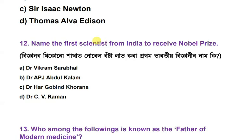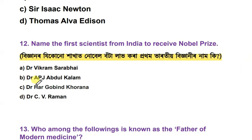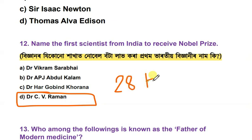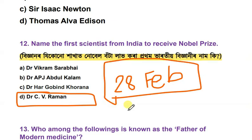Name the first scientist from India to receive the Nobel Prize. The options are Vikram Sarabhai, Dr. A.P.J. Abdul Kalam, Dr. Hargobind Khorana, and Dr. C.V. Raman. The answer is Dr. C.V. Raman — this is the Raman Effect. National Science Day is celebrated on the 28th of February.